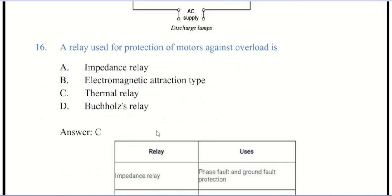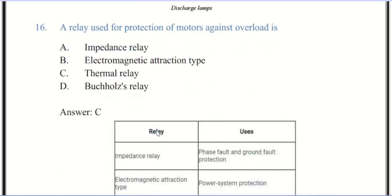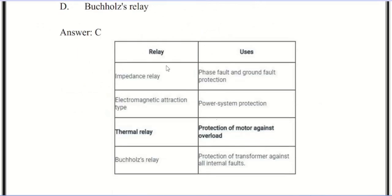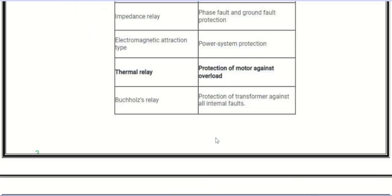Now we come to question number 16. A relay used for protection of motor against overload is thermal relay, the correct answer. Every motor has rated current, which is safe current under which motor runs smoothly. Motor should be run under the rated current. Load current more than rated value is harmful for motor. That's why thermal relay is a protective device used for overload protection of the motor.